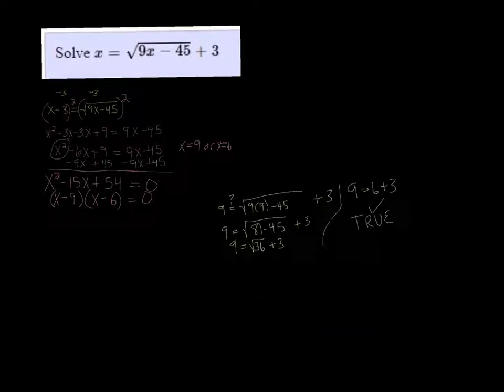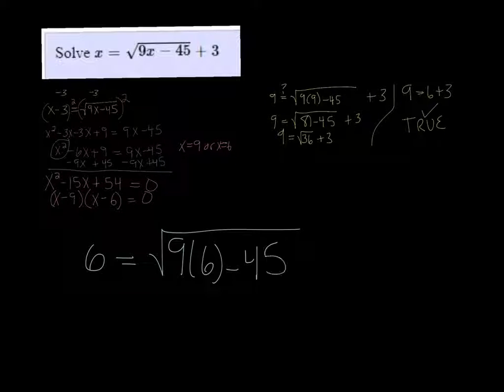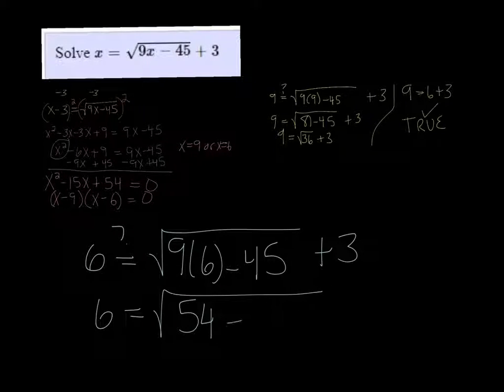All right, now we're going to do the same thing, but with the 6. So we're going to put 6 in, 6 is equal to the square root of 9 times 6 minus 45 plus 3. And I put a question mark here because we're trying to figure out if it does. So 6 is equal to the square root of 54 minus 45 plus 3.